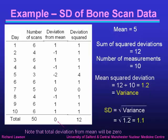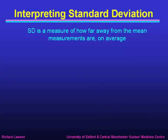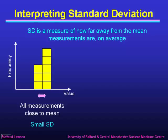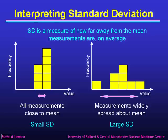Notice that by squaring the deviations, we got a mean squared deviation that was non-zero. That's why we can use variance or standard deviation as a measure of dispersion, but we can't use the mean deviation before squaring, because that always cancels out the positives and negatives. The standard deviation is a measure of how far away from the mean the measurements are on average. A distribution where all measurements are close to the mean will have a small standard deviation, while one where measurements are widely spread about the mean will have a large standard deviation.